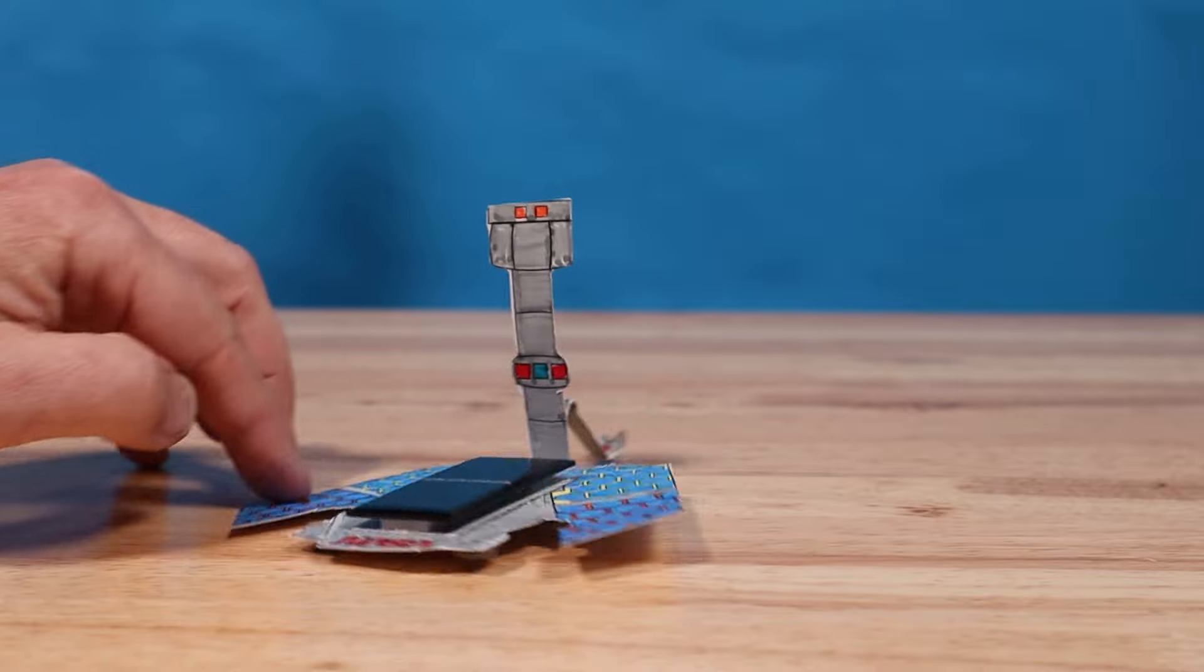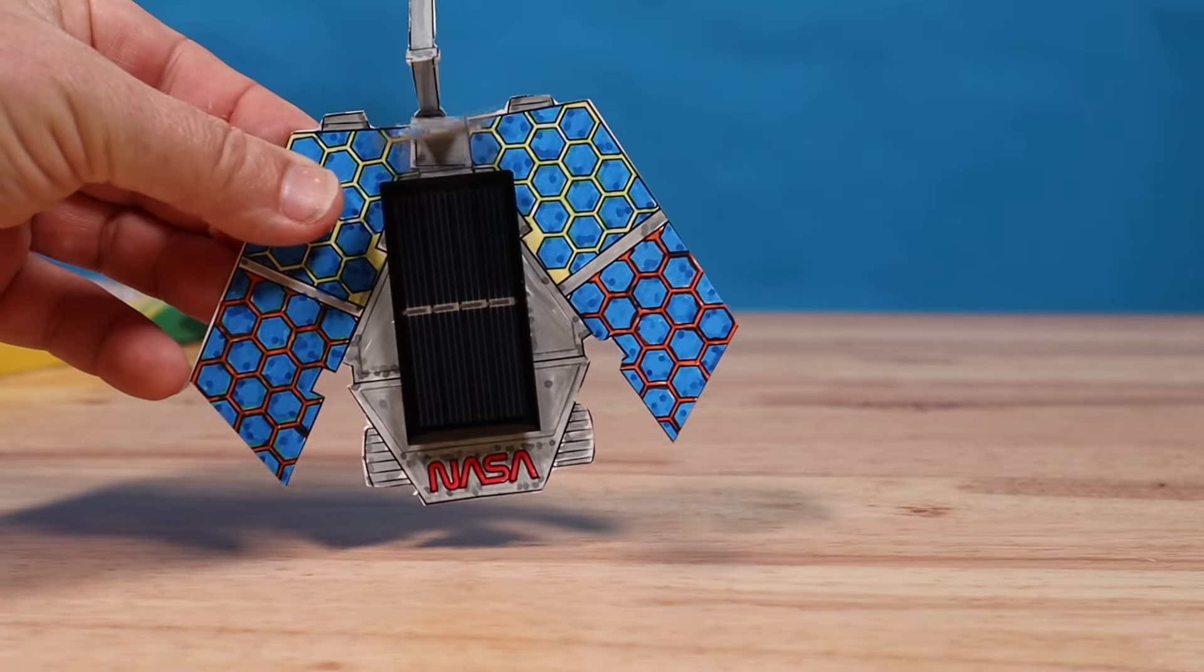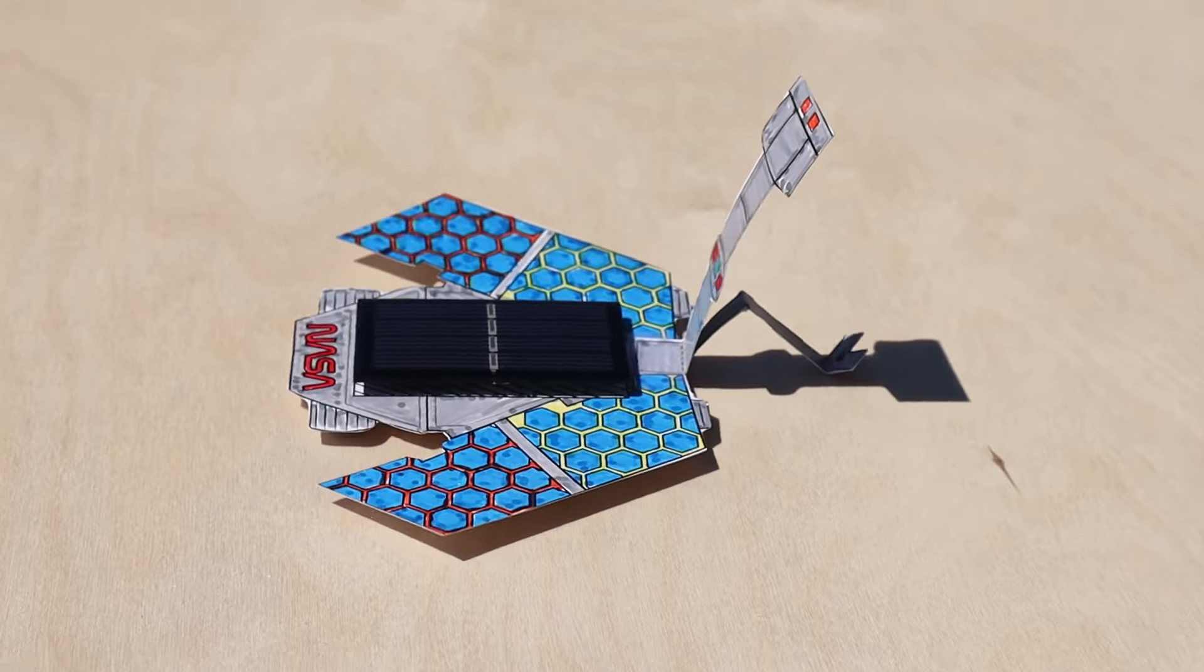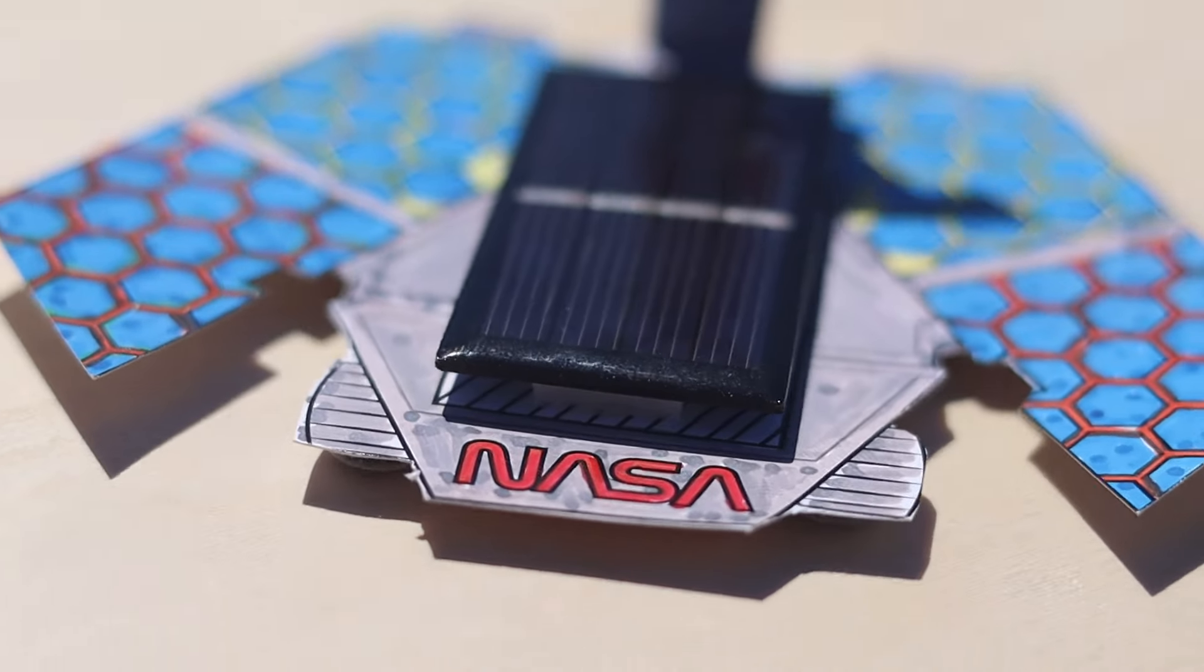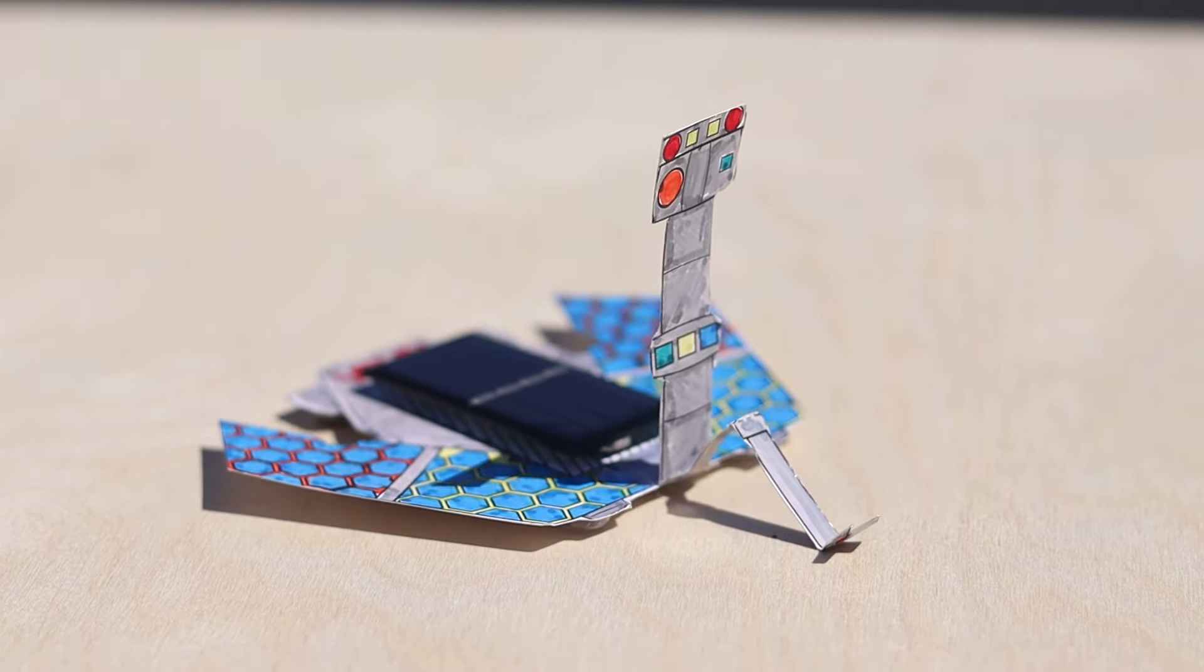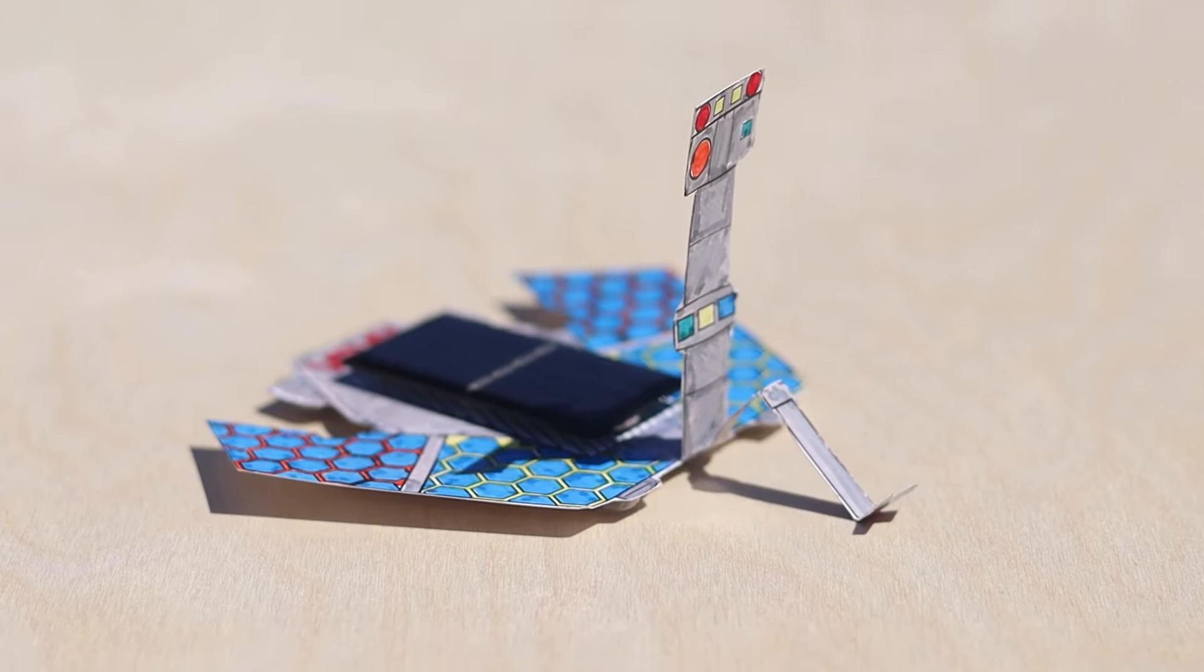Your solar rover assembly is complete and it's ready for action. Place it on a smooth surface in direct sunlight and watch it go. Congratulations, you just built your own solar-powered rover to explore strange new worlds.